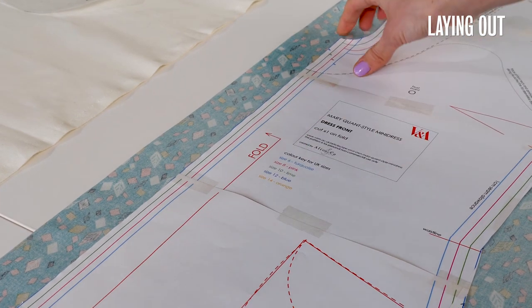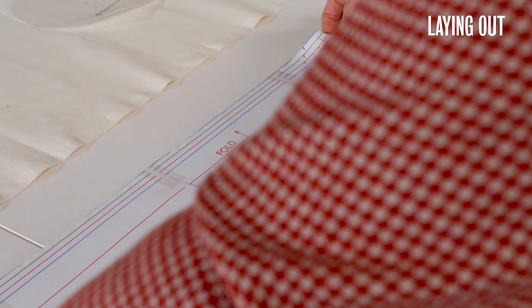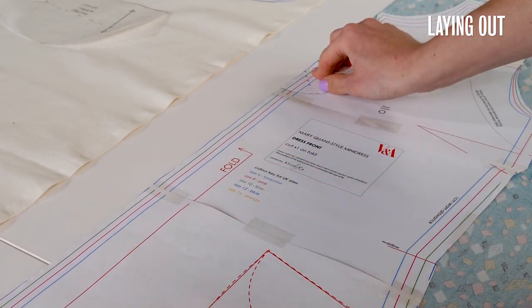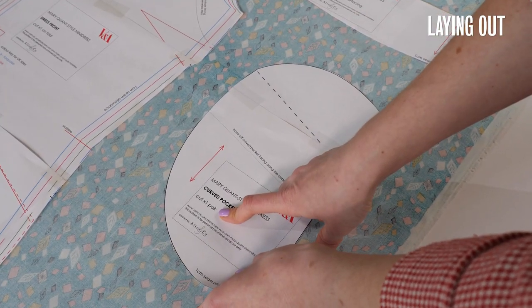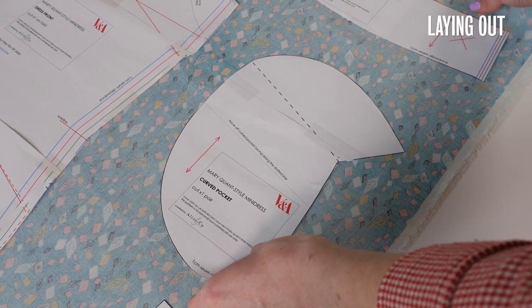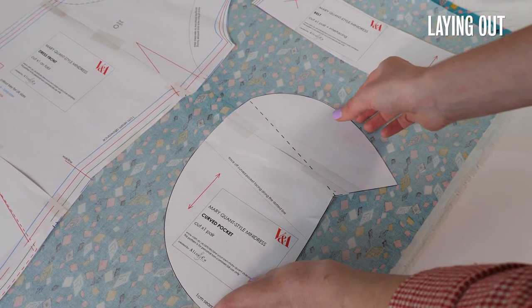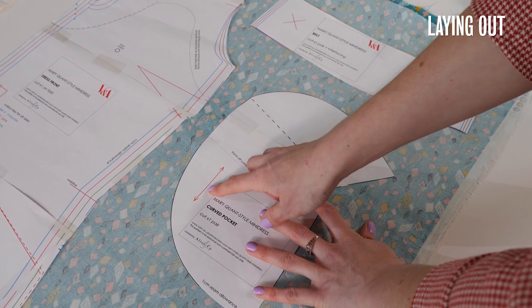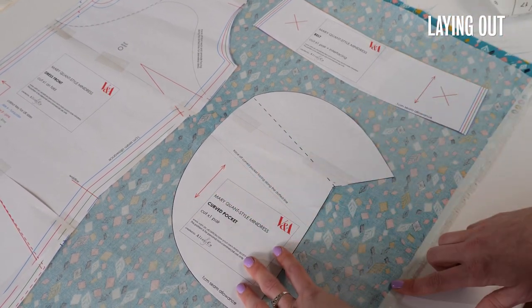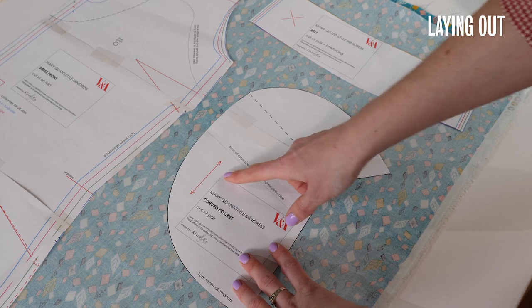So this is cut times one on the fold so I just line up the edge of the pattern piece right up onto the fold. Whereas this one is cut times one pair which means that as my fabric is folded together I just need to cut it out making sure that the grain line is straight and parallel to the selvedge of the fabric.